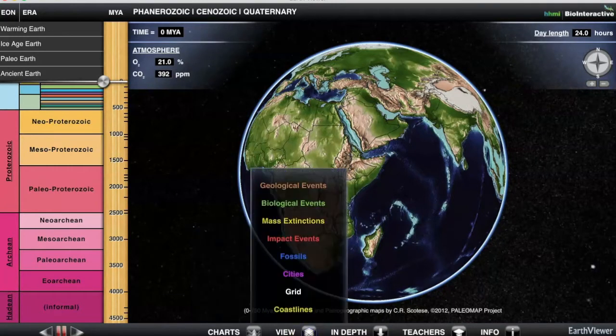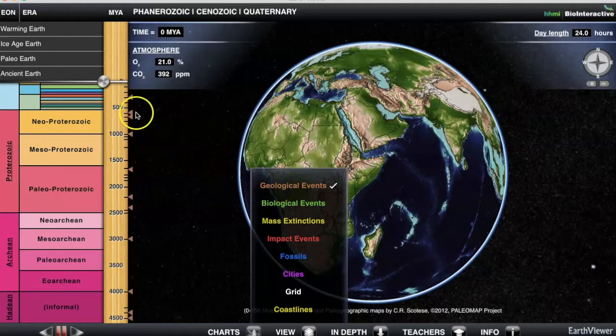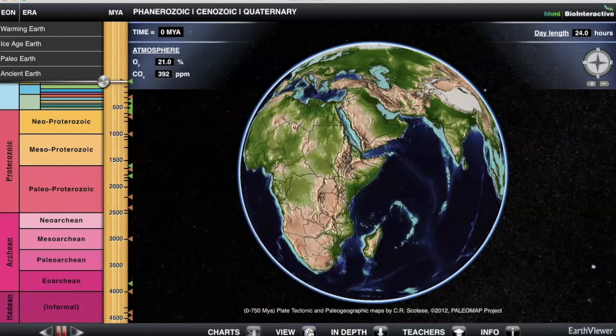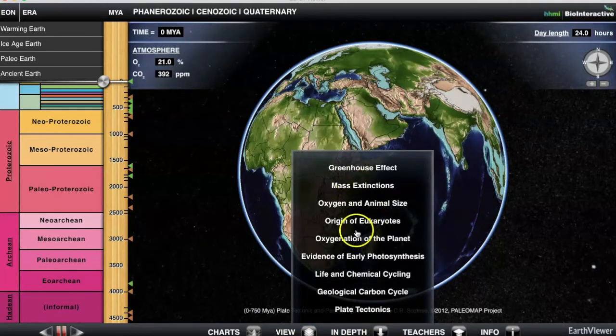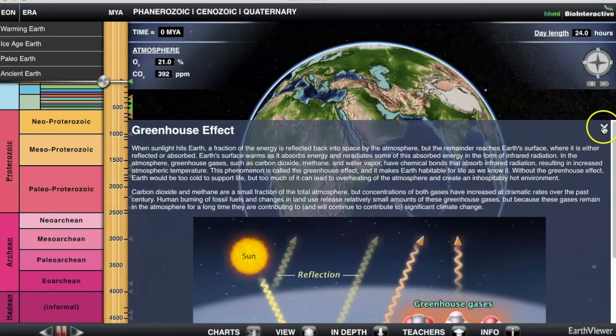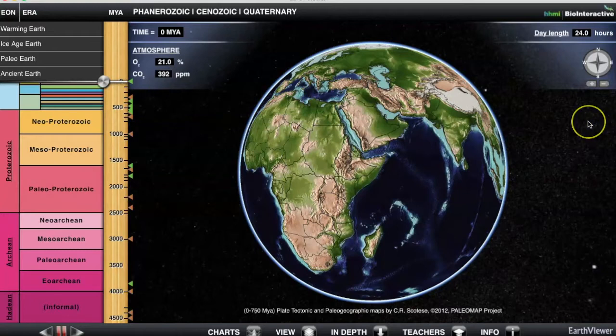If I click on view, we can look at these and these will be timed over here. I'm going to click on geologic events and you'll notice these brown triangles come up. I'm also going to click on biological events. We're going to leave those two up as we explore the Earth Viewer. If you want some in-depth descriptions of the greenhouse effect or the origin of eukaryotic cells or the life and chemical cycling, you just click on that. It's really quite robust. There's a lot of good information here.